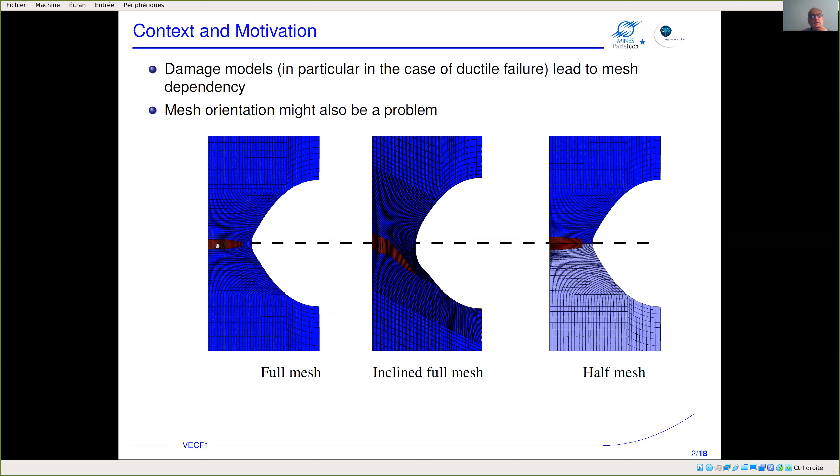Here we have a full mesh with a very regular mesh and you see that the crack here, this red zone, goes through one row of elements. Here, on purpose, we have designed a mesh with inclined rows of elements and you see that the crack is going to follow the row of elements.